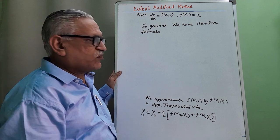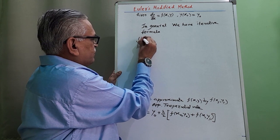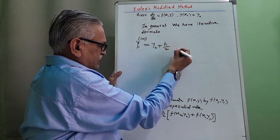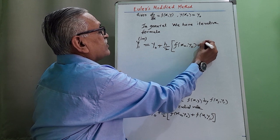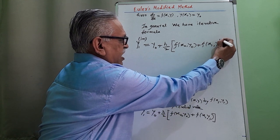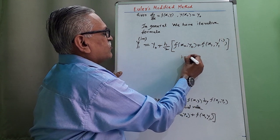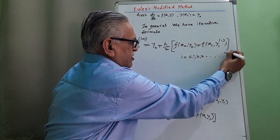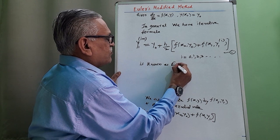In general, the iterative formula is: y₁^(i+1) = y₀ + (h/2) · [f(x₀, y₀) + f(x₁, y₁^(i))], where i changes from 0, 1, 2, 3 and so on. This equation is known as Euler's modified formula or method.